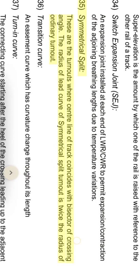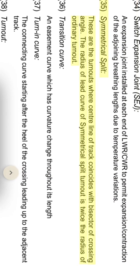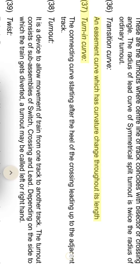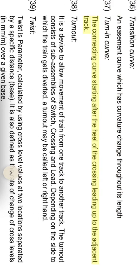Symmetrical split turnout: these are the turnouts where the center line of track coincides with the bisector of the crossing angle. The radius of the left curve of a symmetrical split turnout is twice the radius of an ordinary turnout. Transition curve: an easement curve which has curvature changing throughout its length. Turn-in curve: the connecting curve starting after the heel of the crossing, leading up to the adjacent track.